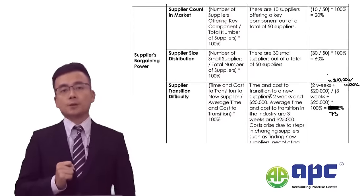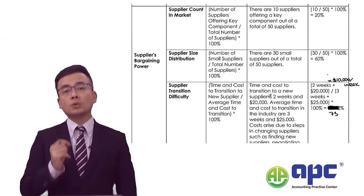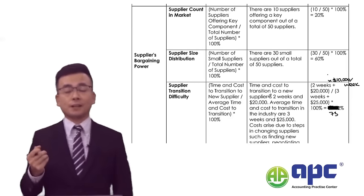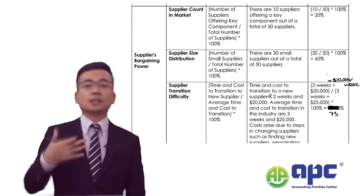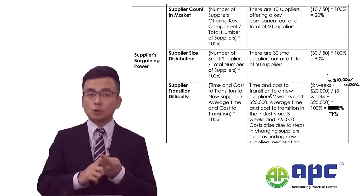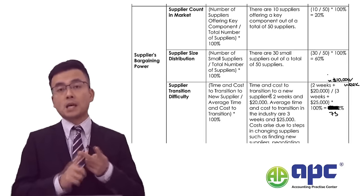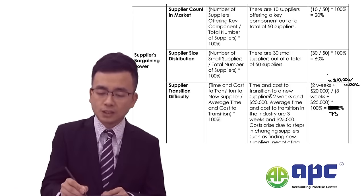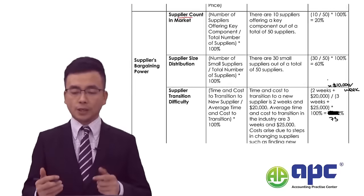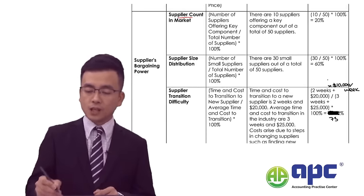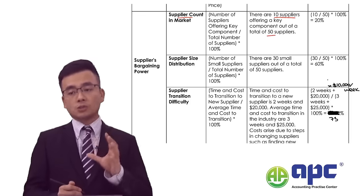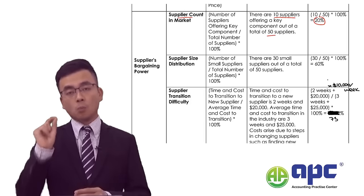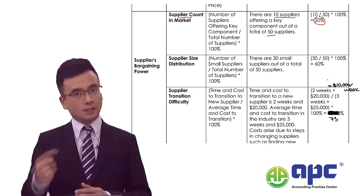For suppliers — the companies selling things to us — we have suppliers in terms of workforce, funding, raw materials, and technology. First, we count the suppliers in the market. For example, there are 10 suppliers offering a key component out of 50 total suppliers, meaning 20% offer what we need. We may also need to pick one from those 10 existing suppliers in the marketplace.